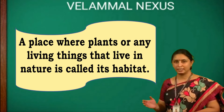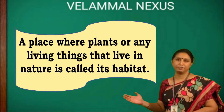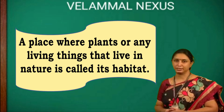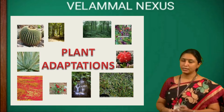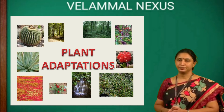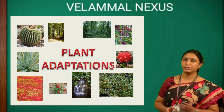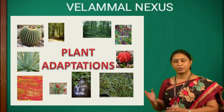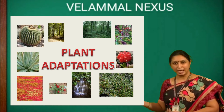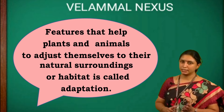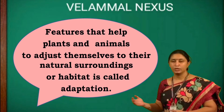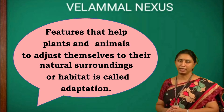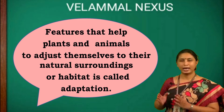A place where plants or any living things live in nature is called habitat. Plants that grow in different habitats have special features to adapt themselves to the natural surrounding. We call them adaptation. Features that help plants and animals to adjust themselves to the natural surrounding is called adaptation.